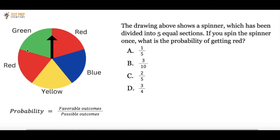Okay, so the basic formula for probability is probability equals the number of favorable outcomes divided by the number of possible outcomes.